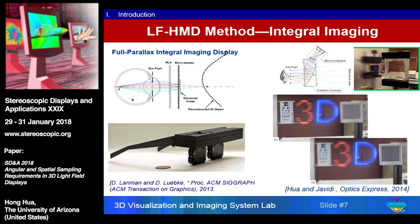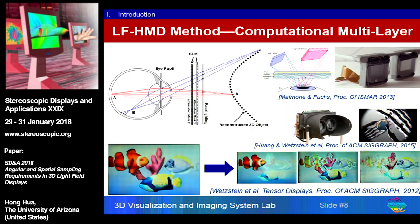In terms of optical architecture for HMDs, there are two commonly known architectures. One is the integral imaging type of approach — you have a micro display combined with either a pinhole array or a lens-let array, which can be used independently. We demonstrated earlier that you can combine that with a freeform eyepiece to create an AR display that renders 3D light fields. An alternative approach is the multi-layer type, where instead of using a lens-let array, you stack multiple layers of spatial light modulators, so pixels from two different layers define ray direction.